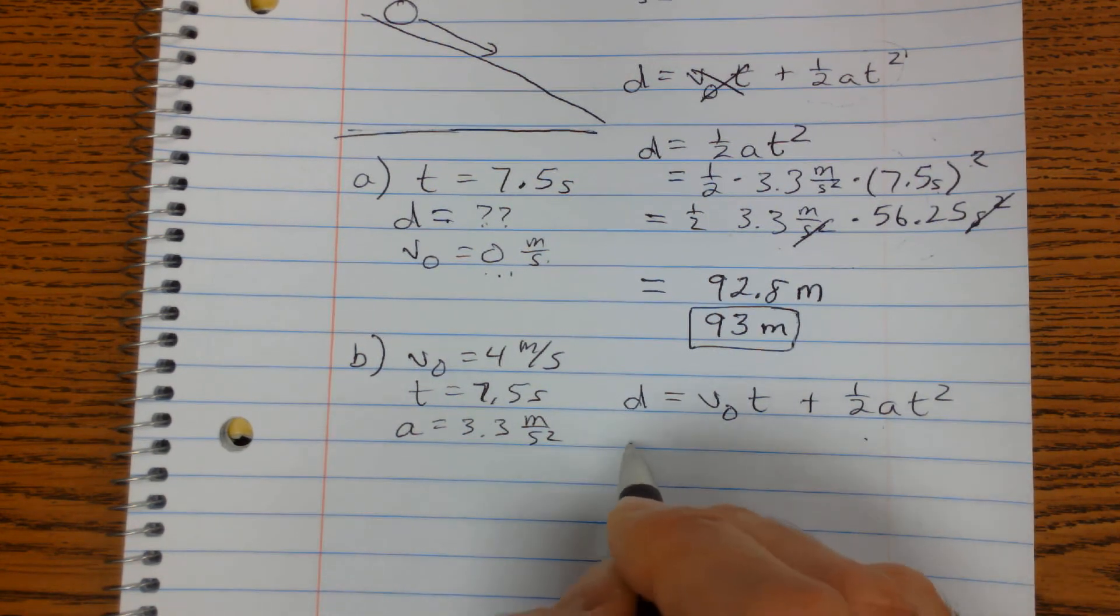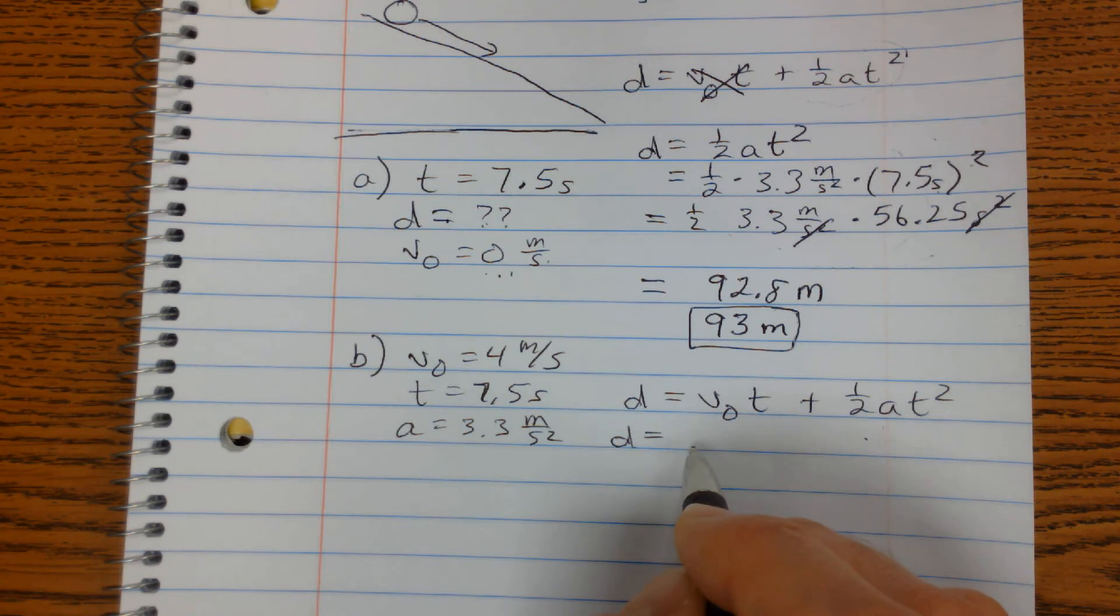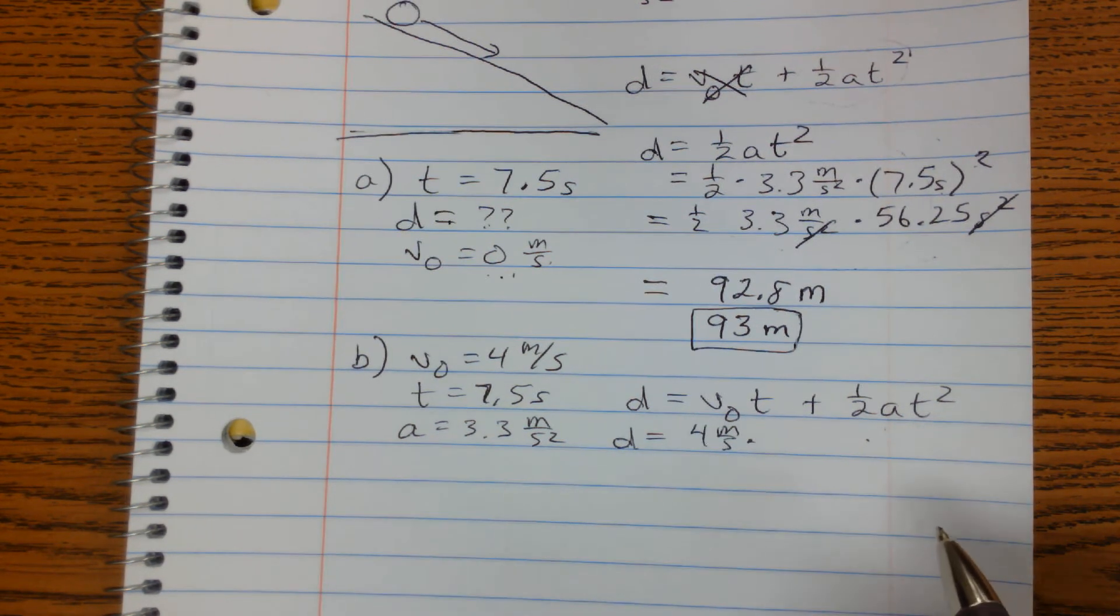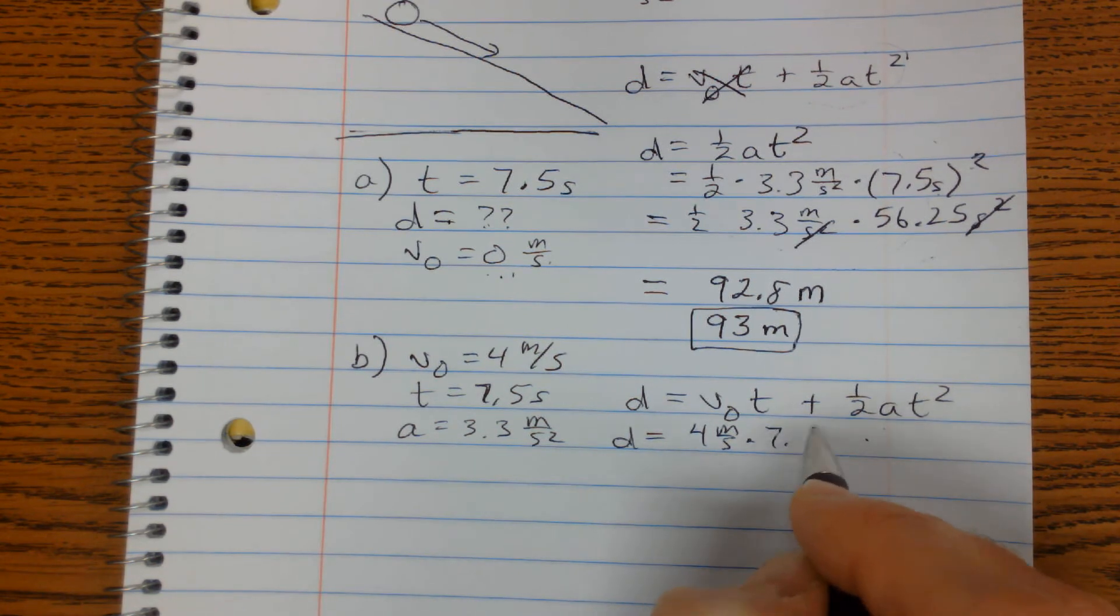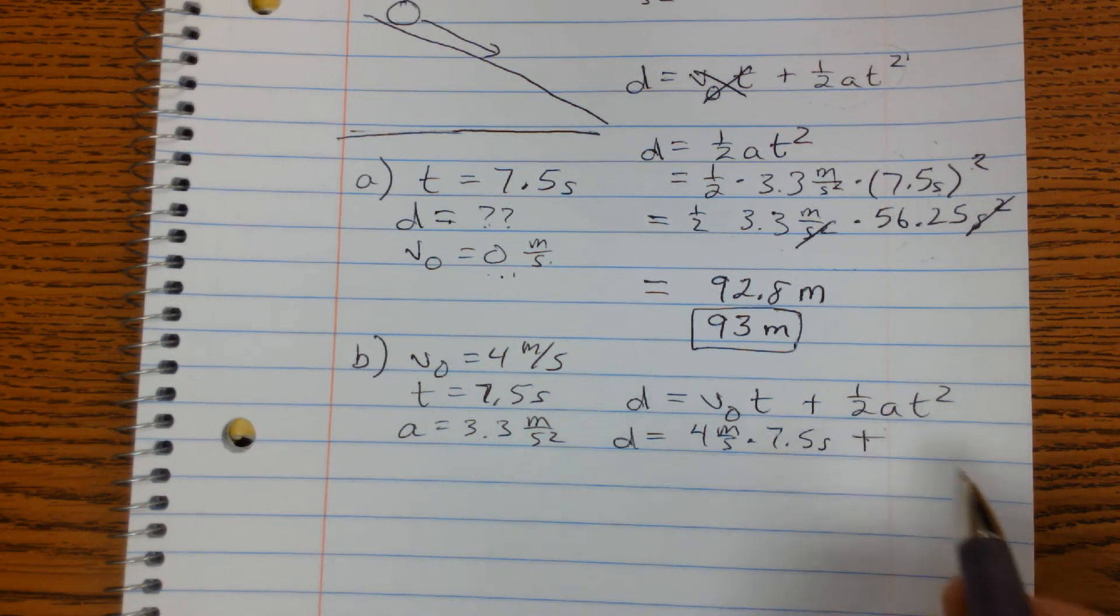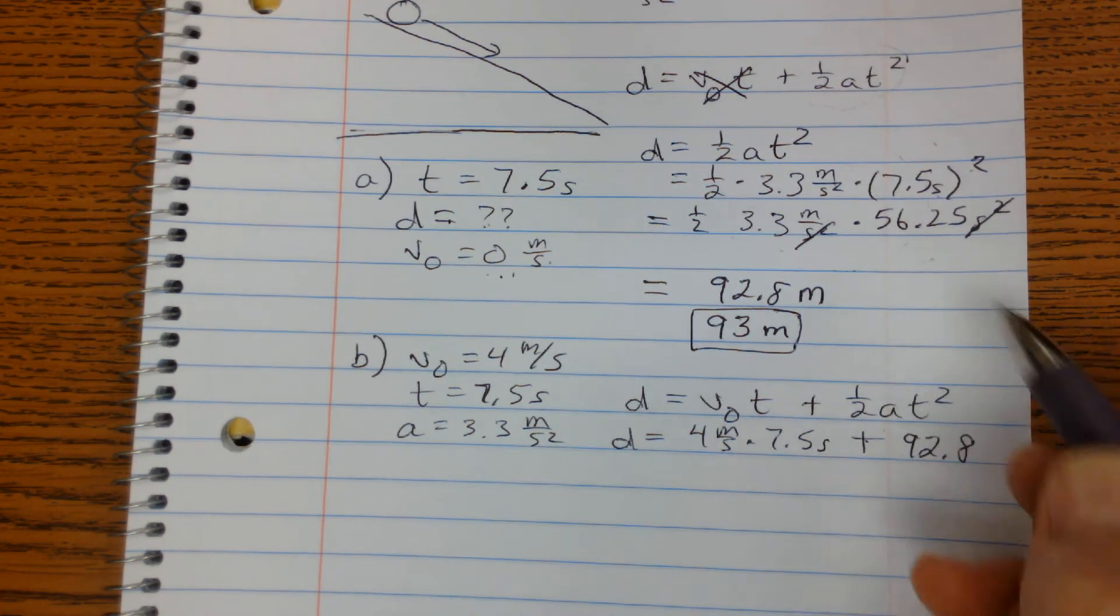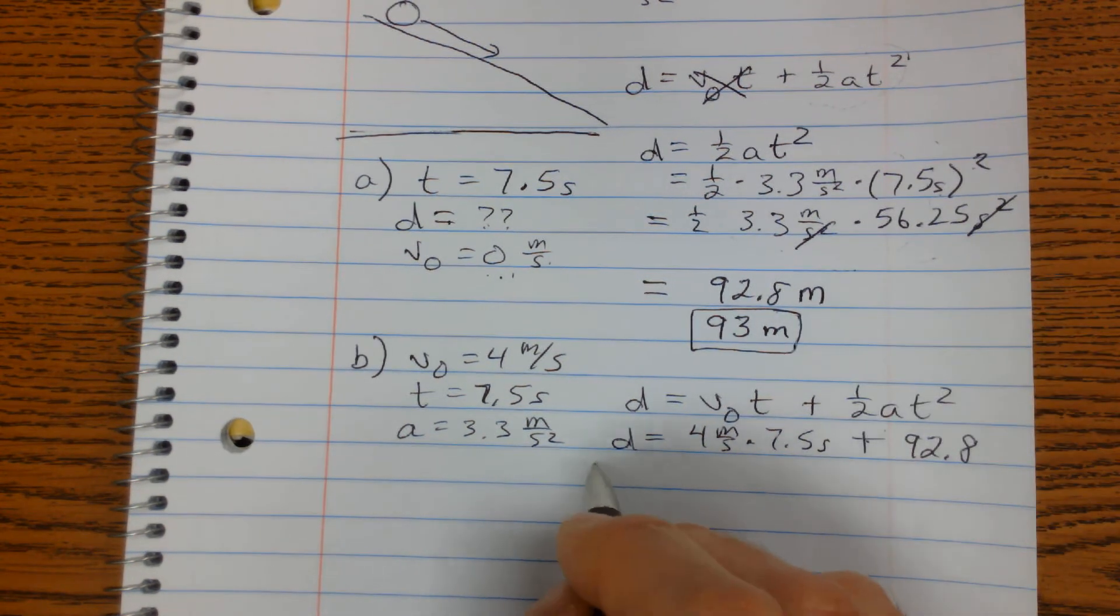So plug in the numbers. Distance is equal to the initial velocity, which now is 4 meters per second, times 7.5 seconds. And I'm going to shortcut this, and I'm going to put my 92.8 meters, because none of that work changed.